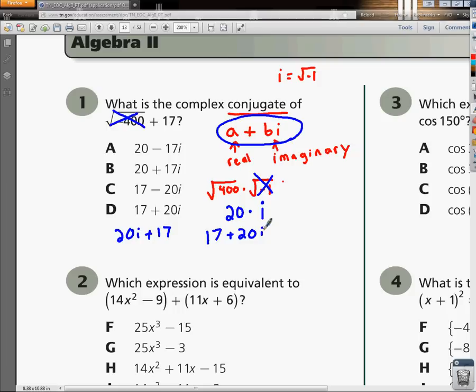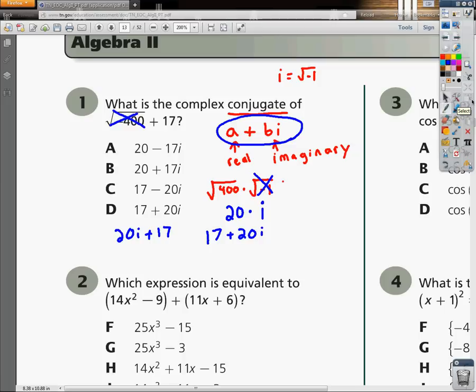Typically, when students do this problem, they'll get to 17 plus 20i, and they'll be so happy that they solved it, and they'll be so happy that their answer is there. However, that answer is not the correct answer, because the conjugate means that you need to change the sign of the plus to a minus.